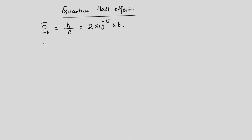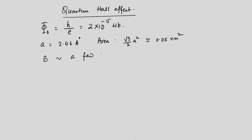This honeycomb lattice has a lattice constant of about 2.46 Å. A back-of-the-envelope calculation gives the area of the unit cell — which is just the honeycomb structure — as (√3/2)a², coming out to about 0.051 nm². So if we multiply a magnetic field by this area to find the flux, that magnetic field has to be a few kiloteslas or more, which is a very large magnetic field.